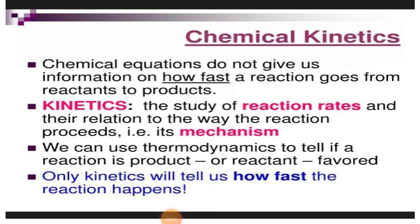A chemical equation does not give us information on how fast a reaction goes from reactant to product - it does not tell us what the speed of the reaction is. Chemical kinetics gives us the study of reaction rate, that is, how fast the reaction proceeds, and their relation to the way the reaction proceeds - that is its mechanism, whether the reaction takes place in one step or more than one step.